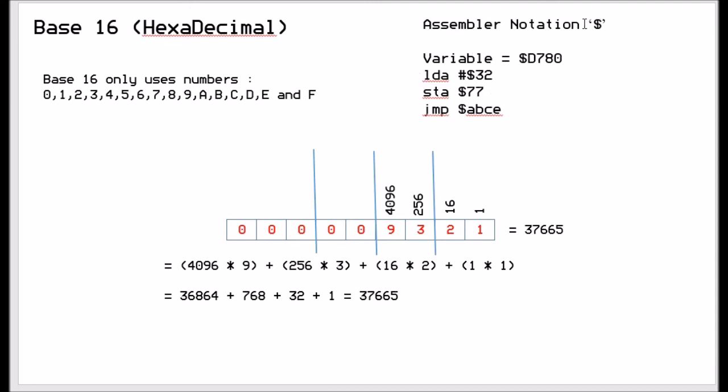So 9321 in hexadecimal is equal to 37665. So when you're using it in assembler, you always put the dollar sign in front of it. So for example, variable would equal dollar D780, or you could use it in commands by saying LDA hash dollar 32, or store in dollar 77, or jump to dollar ABCE.